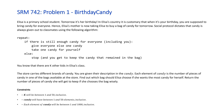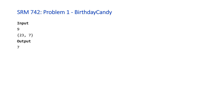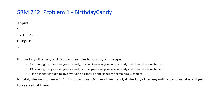Let's take a look at one of the examples. The input is K=9 and the candy vector has elements 23 and 7. The output is 7. If Eliza buys the bag with 23 candies: 23 is enough for everyone, so she gives 9 classmates a candy and takes one for herself — 10 candies distributed, she now has 1. Then 13 is enough again: she hands out 9, takes one, and now has 2. Then 3 is no longer enough, so she keeps the remaining 3. In total: 1+1+3 = 5 candies.